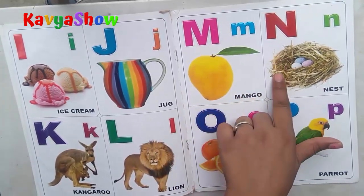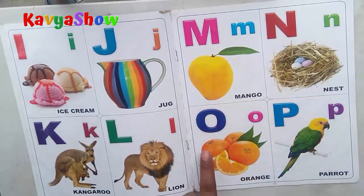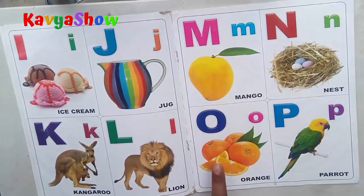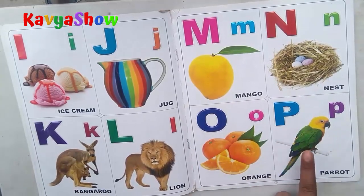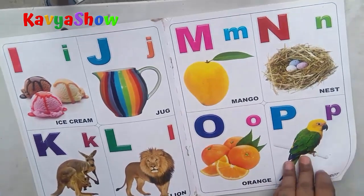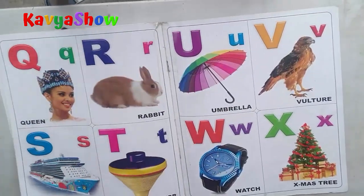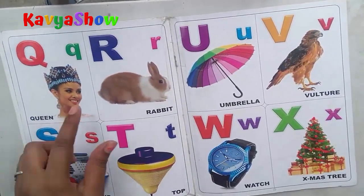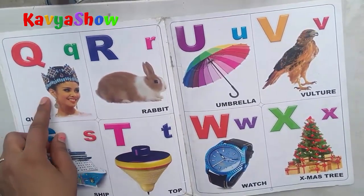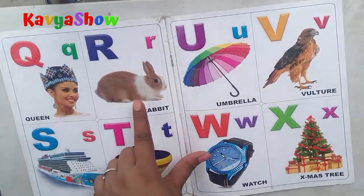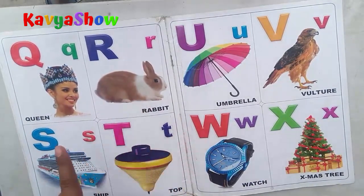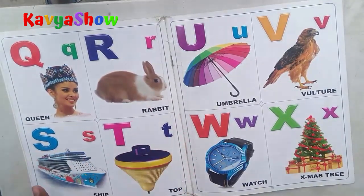M for mango, N for nest, O for orange, P for parrot, Q for queen, R for rabbit.